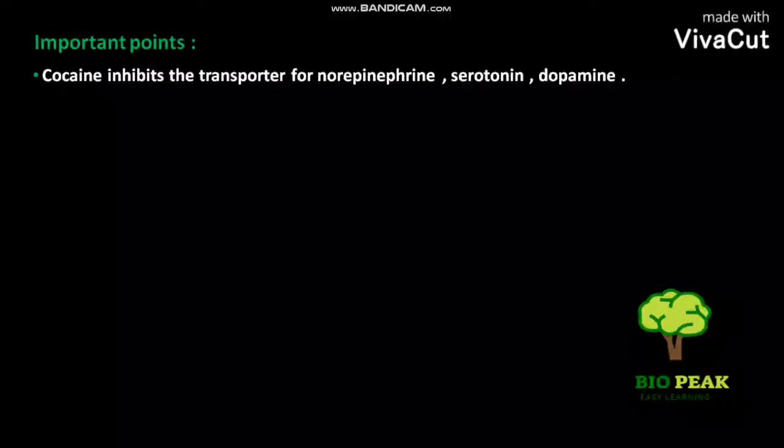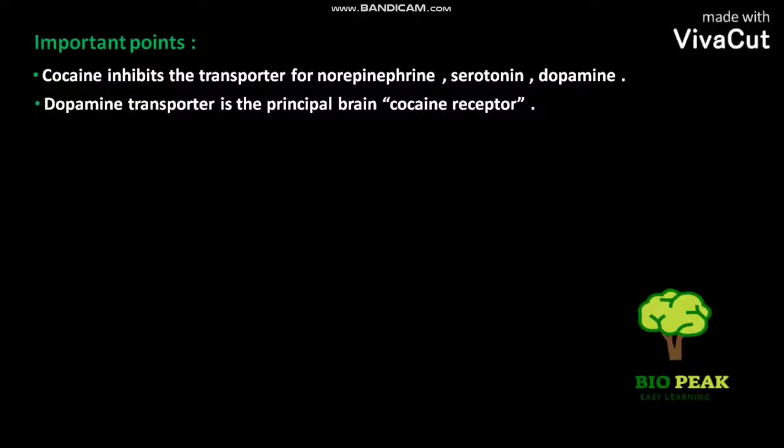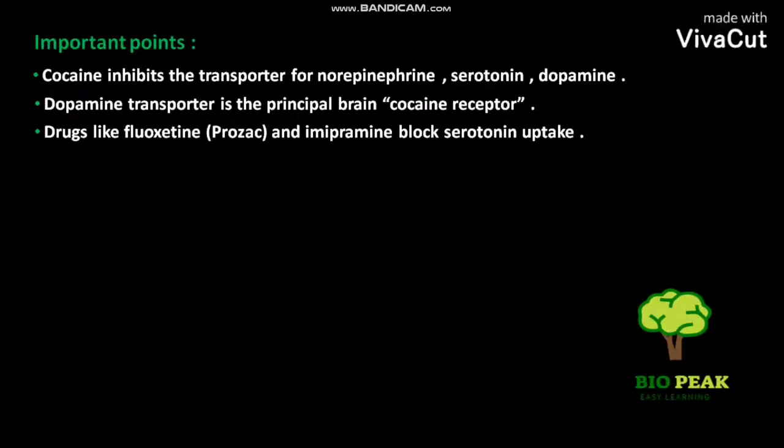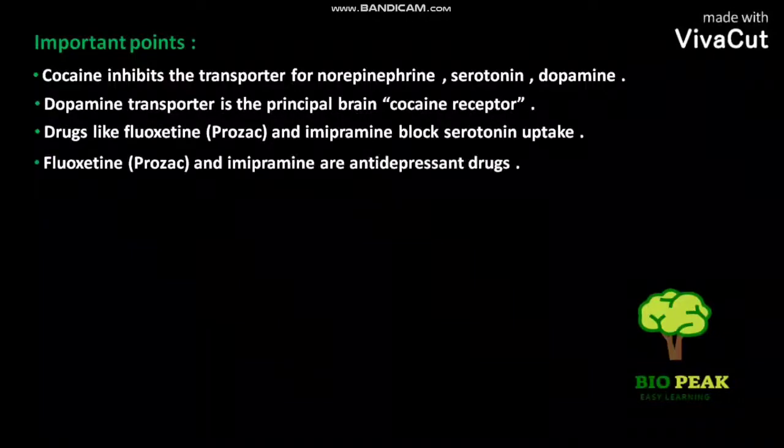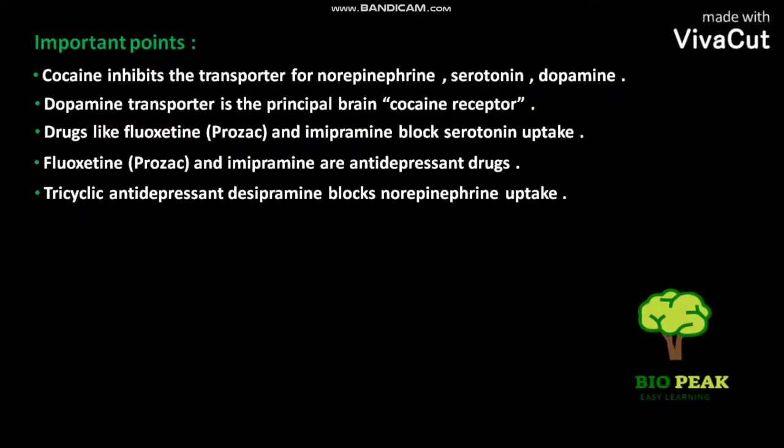Important points: Cocaine inhibits the transporter for norepinephrine, serotonin, and dopamine. Dopamine transporter is the principal brain cocaine receptor. Drugs like fluoxetine (Prozac) and imipramine block serotonin uptake. Fluoxetine (Prozac) and imipramine are antidepressant drugs. The tricyclic antidepressant desipramine blocks norepinephrine uptake.